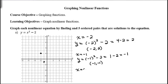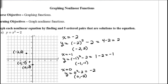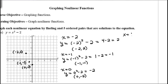Plugging in x equals 0: y equals 0 squared minus 2, which is 0 minus 2, or negative 2. So the point is (0, −2). You should always label your points when you put them on the graph. Then for x equals 1: y equals 1 squared minus 2, which is 1 minus 2, or negative 1. That gives the point (1, −1).